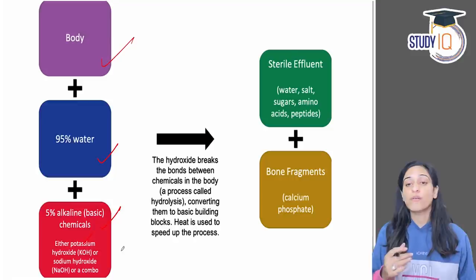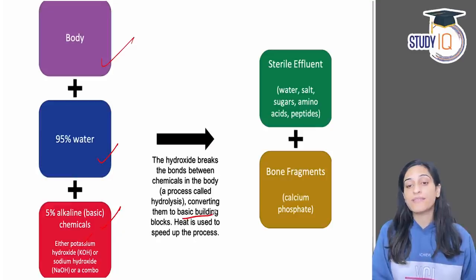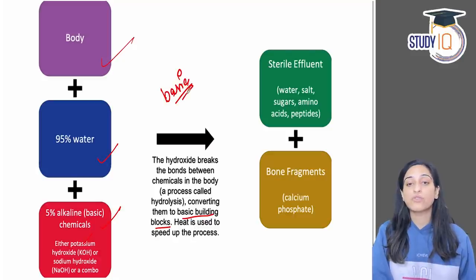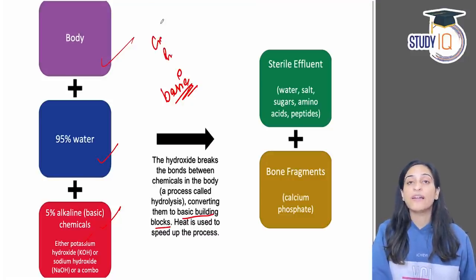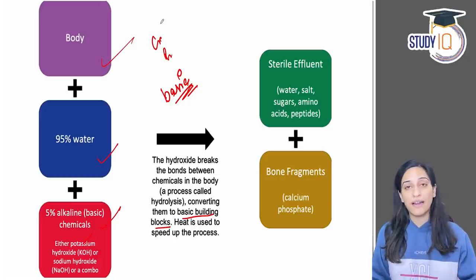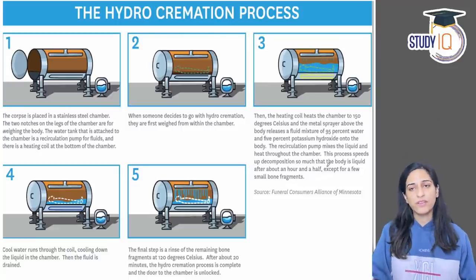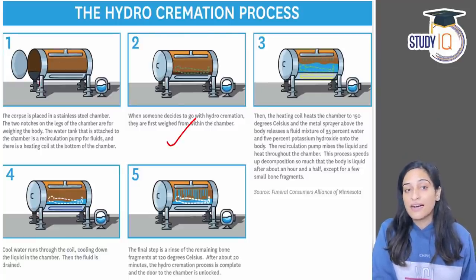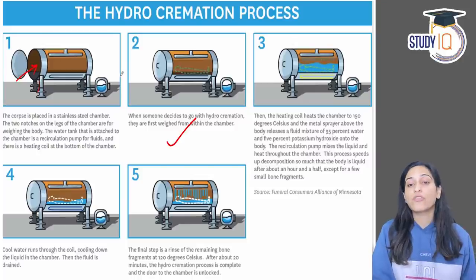The hydroxide breaks the chemical bonds in our body, converting them into basic building blocks. Heat is used to speed up this process, similar to how cremation or burial eventually breaks down the body over time. The process uses water, alkalinity, and heat together to accelerate decomposition. This results in a sterile effluent and bone fragments. The body is placed inside a pressurized steel chamber cylinder with water tanks and fluid pumps attached, where the aquamation takes place.